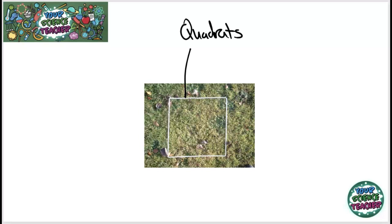But there are some key considerations that we need to make when using these quadrats. For example, we need to make sure that we place the quadrats randomly, because if we don't, we are putting bias into our experiment.